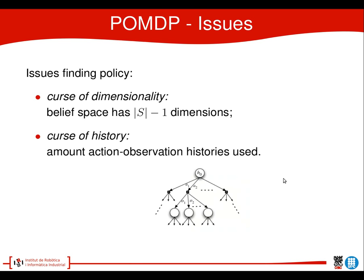There are some issues with POMDPs. Since we are not working with direct states but with beliefs, we have a belief space which has the number of states minus 1 dimensions. Furthermore, if we are looking into the next steps in the future, we have a certain tree which is growing exponentially. We have an initial belief B0, and then we have a certain number of actions we can do in each of those beliefs, and for each of those actions a limited number of observations we can do. This makes the tree grow exponentially.